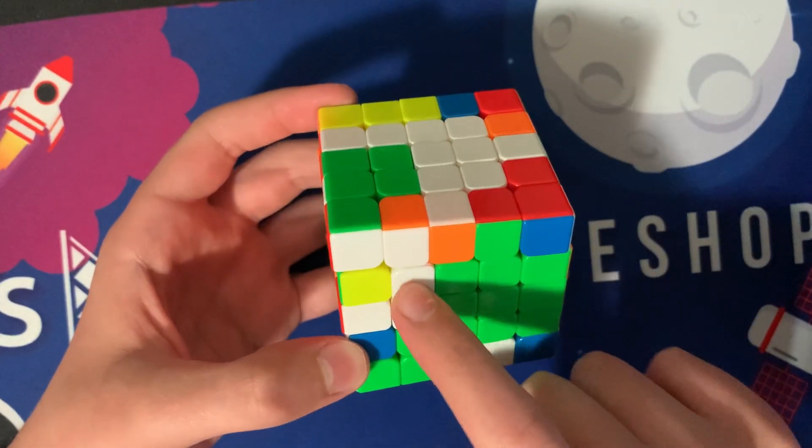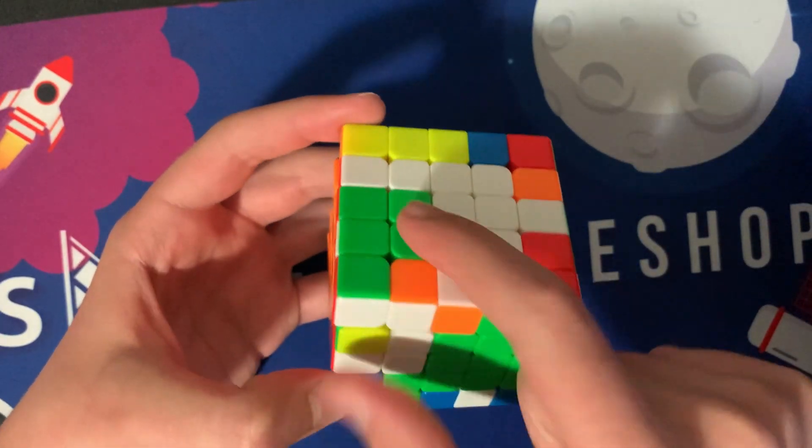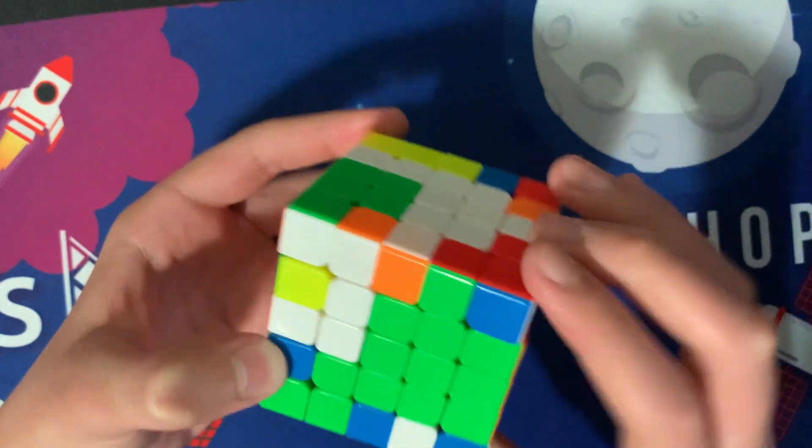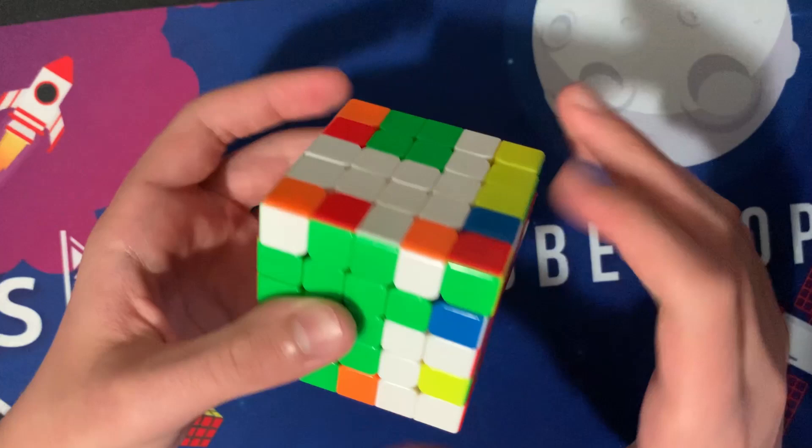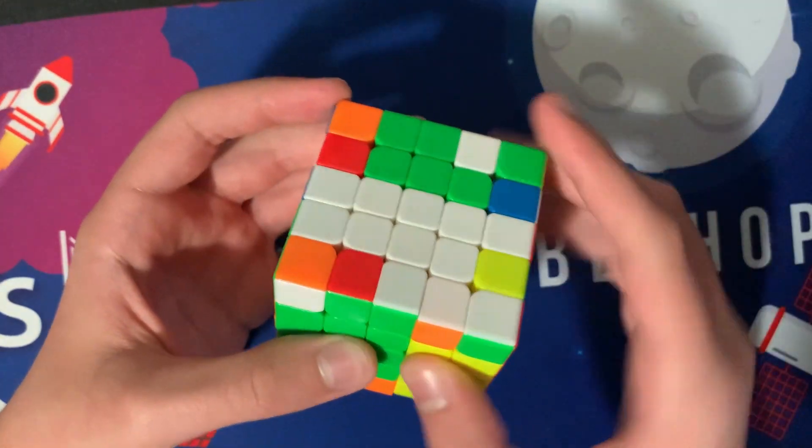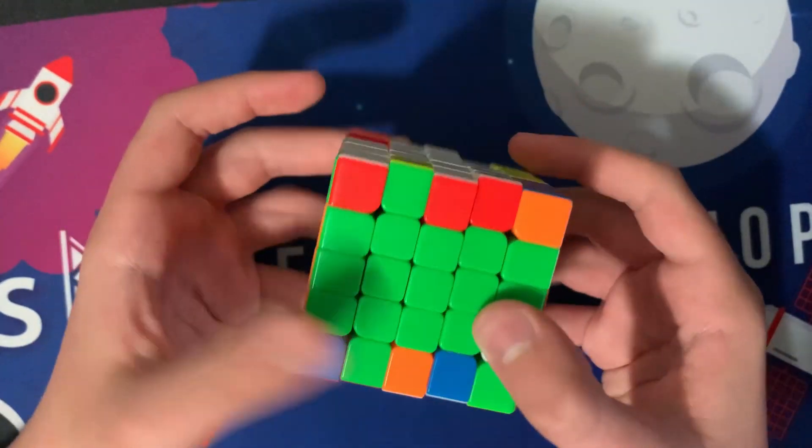And the first one looks like this where you have these pieces that are like facing in. And to solve this, you do F2, a U move, and then go R with a wide move, and U, R prime. That's all.